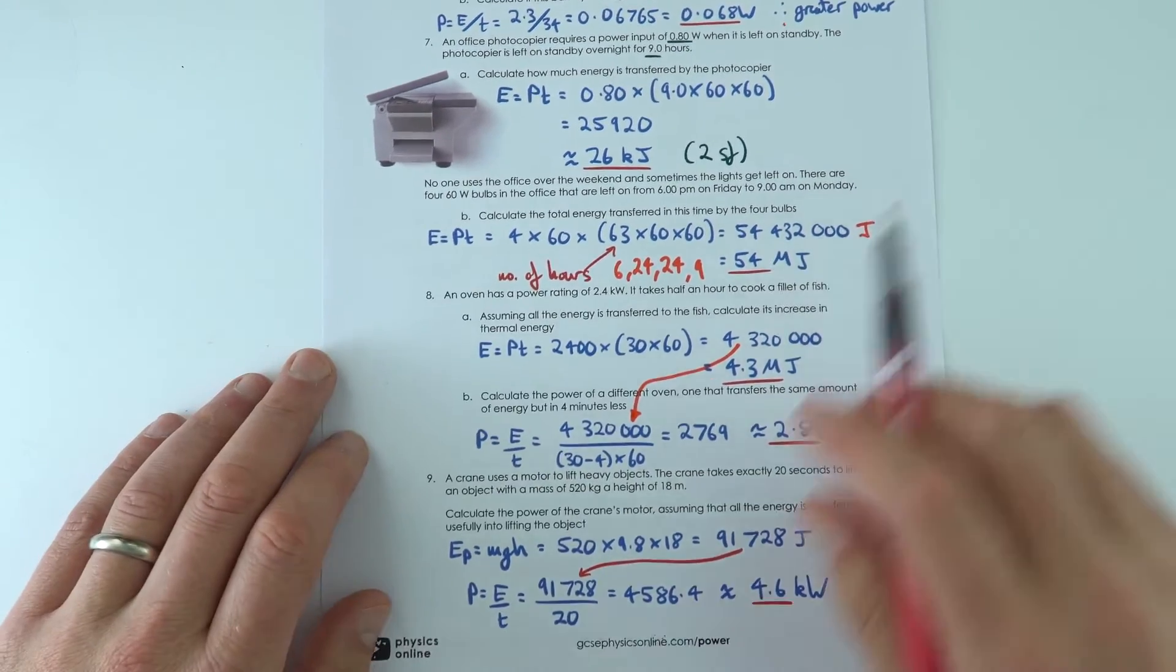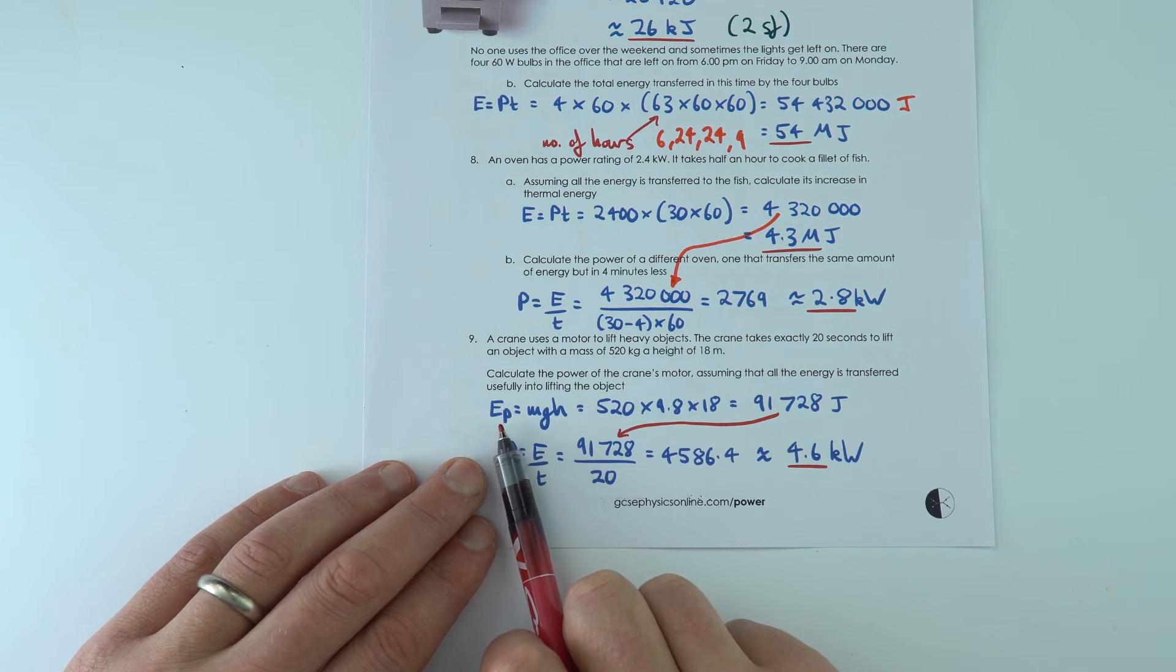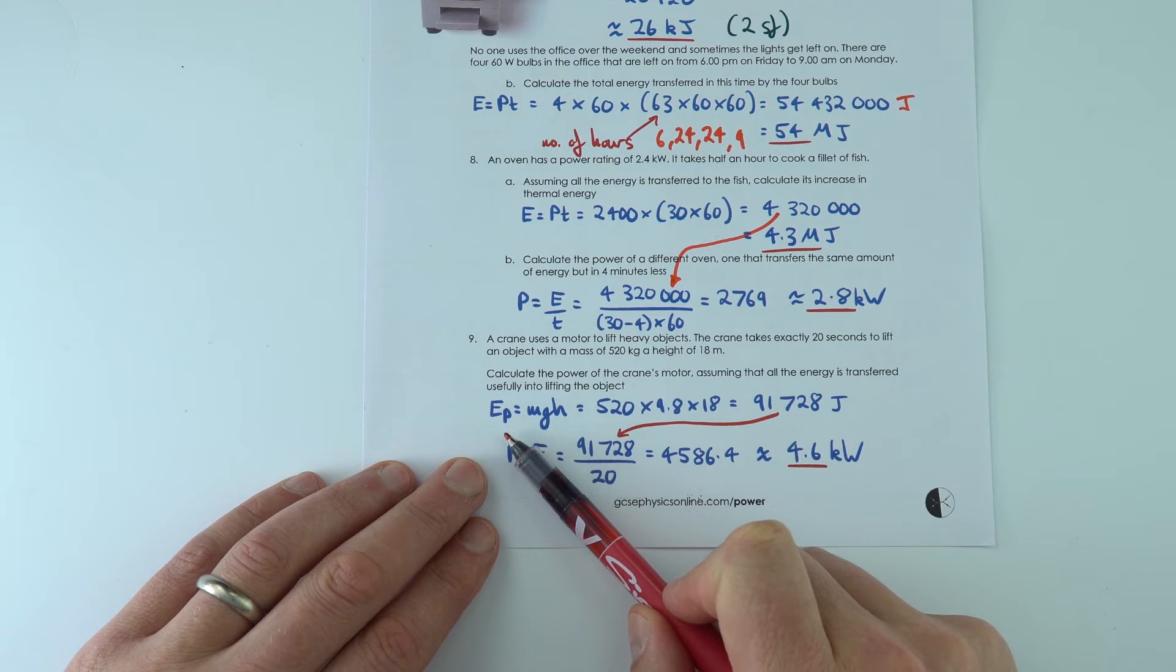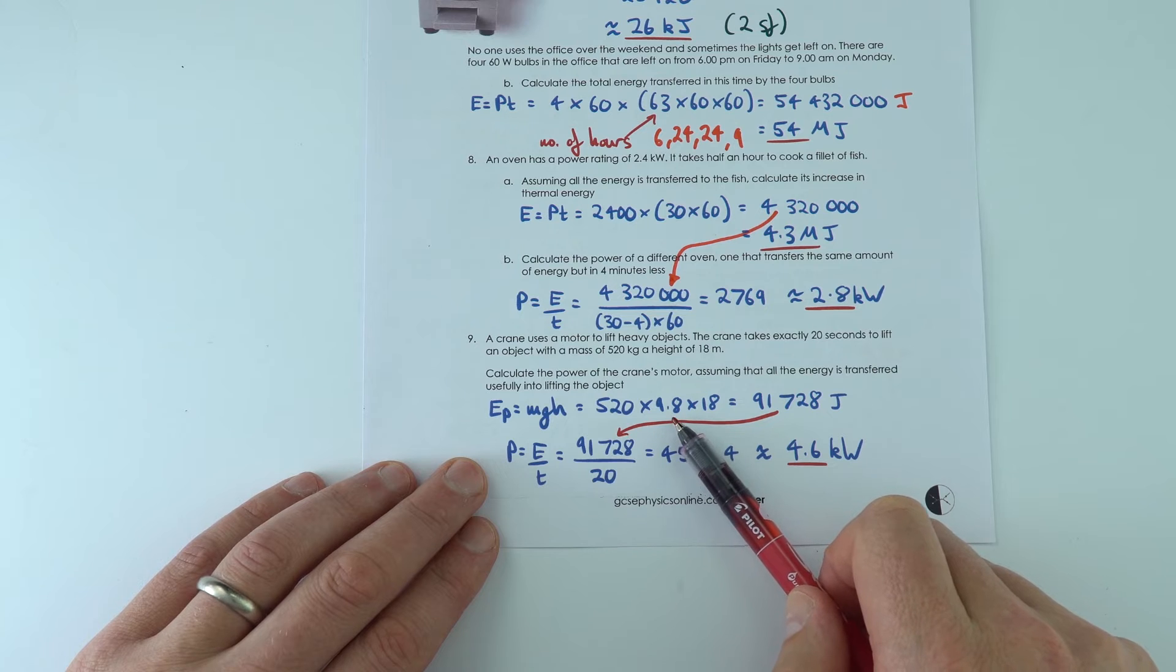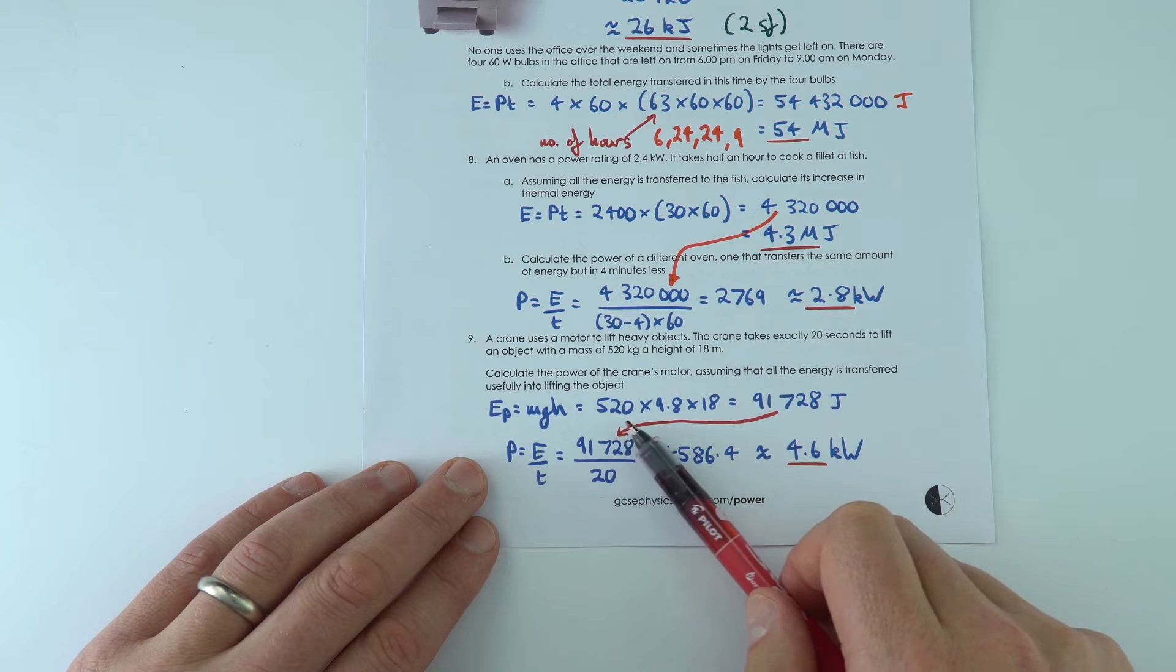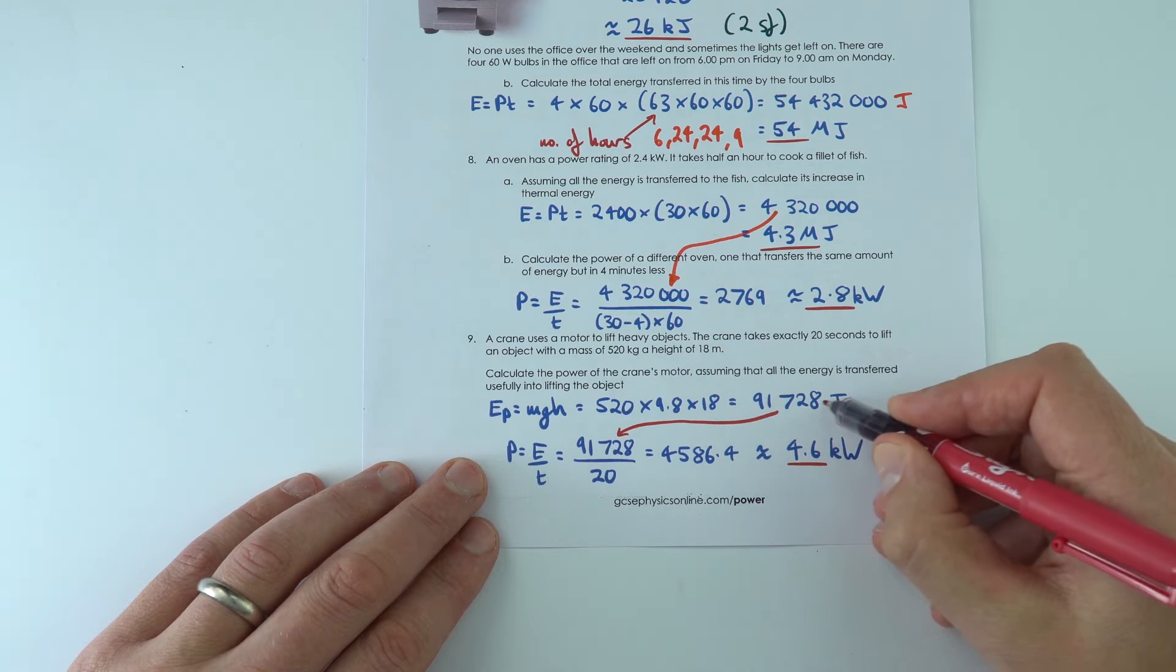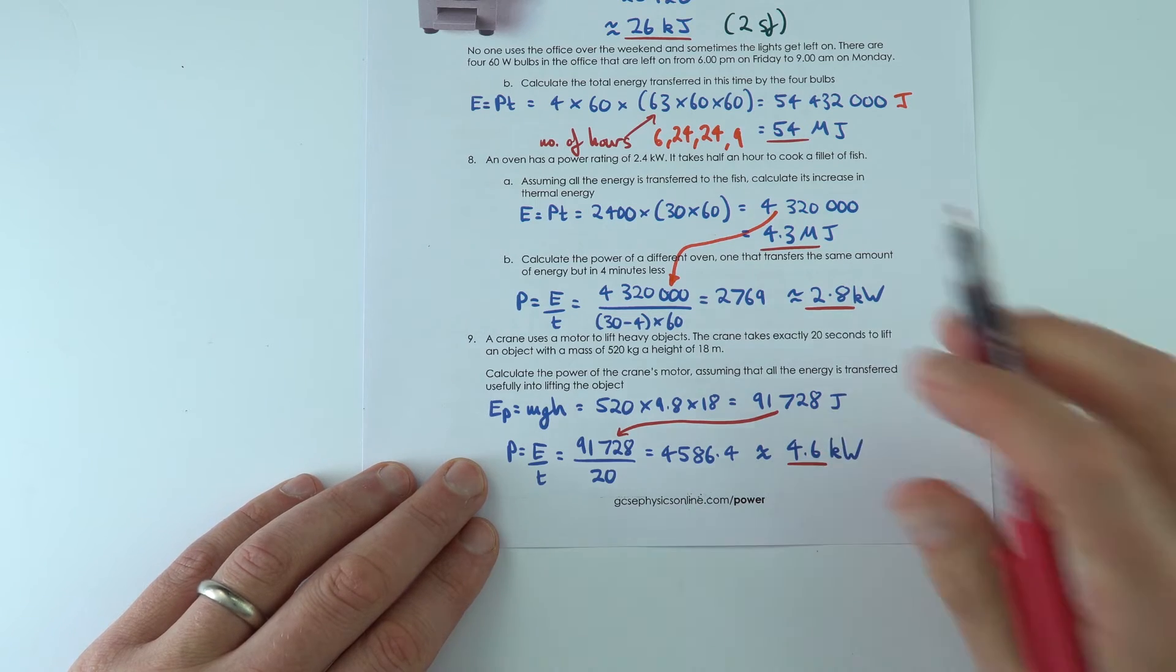And then finally, we've just got something where it's a two-stage calculation. The first bit, you need to look at the energy gained by the thing that's moved up. So its gravitational potential energy is equal to mgh. So g is 9.8, the height was 18, and it's got a mass of 520 kilograms. So that means that that's the amount of energy gained in the gravitational potential store over 20 seconds gives a value of about 4.6 kilowatts.